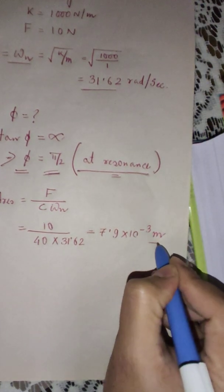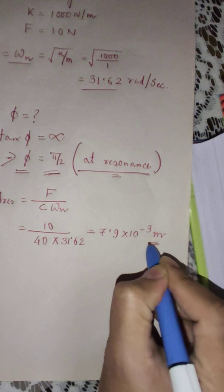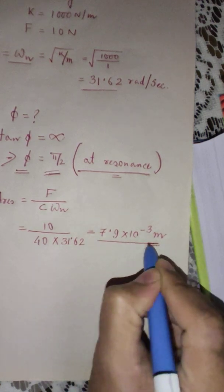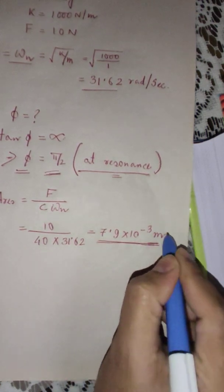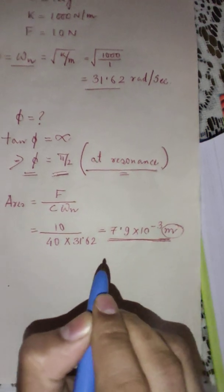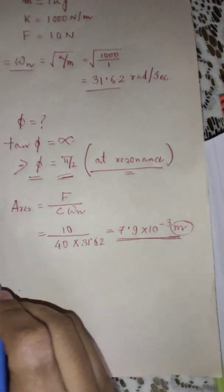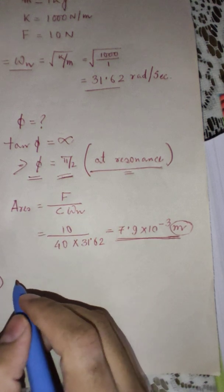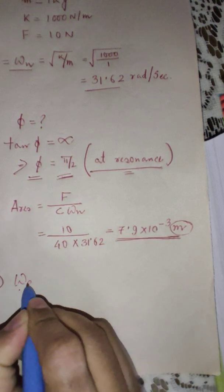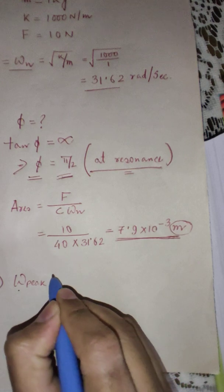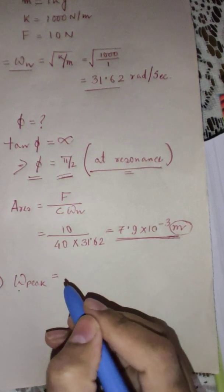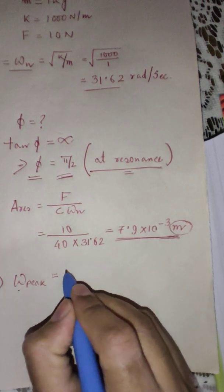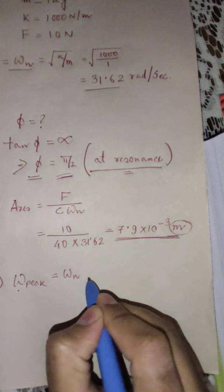The unit of amplitude is always meter. Remember this, amplitude unit is always meter. Remember this very well. Now the next fourth part is the frequency corresponding to peak amplitude.